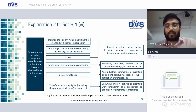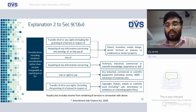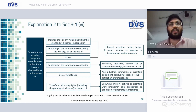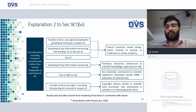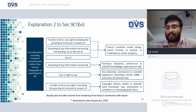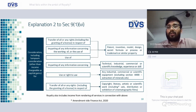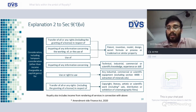Royalty also includes: imparting of any information concerning technical, industrial, commercial, or scientific knowledge, experience, or skill; use or right to use any industrial, commercial, or scientific equipment, excluding Section 44BB relating to extraction of mineral oils; transfer of all or any rights in respect of copyrights, literary, artistic, or scientific work, including sale, distribution, and exhibition of cinematographic films. As per the Finance Act 2020 amendment, royalty now also includes consideration paid in respect of sale, distribution, or exhibition of cinematographic films.